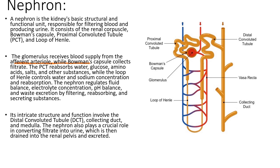In this slide, we will be talking about the structure and function of the nephron. A nephron is the basic structural and functional unit of the kidney. It is responsible for filtering blood and producing urine. Each kidney contains millions of nephrons, and their collective activity enables the kidneys to perform their essential functions.